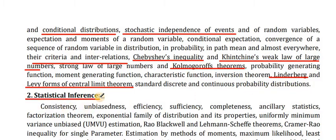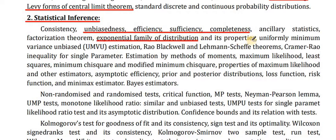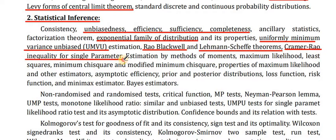Point 2: Statistical Inference. Consistency, Unbiasedness, Efficiency, Sufficiency, Completeness, Ancillary Statistics, Factorization Theorem, Exponential Family of Distributions and its Properties, Uniformly Minimum Variance Unbiased (UMVU) Estimation, Rao-Blackwell and Lehmann-Scheffé Theorem, Cramér-Rao Inequality for single parameter, Estimation by Method of Moments, Maximum Likelihood, Least Squares, Minimum Chi-Squares, and Modified Minimum Chi-Squares, Properties of Maximum Likelihood and other Estimators, Asymptotic Efficiency.